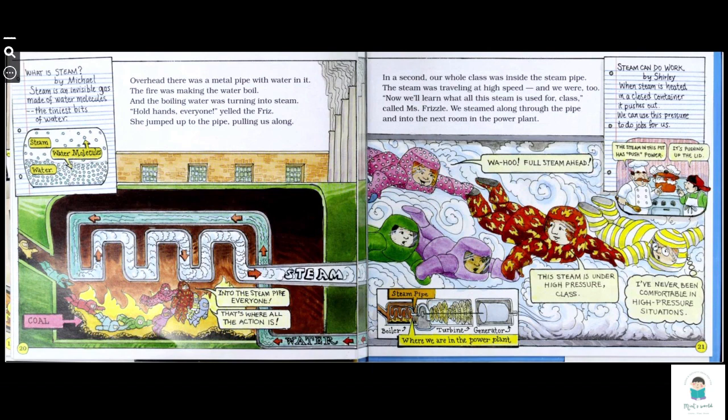Overhead was a metal pipe with water in it. The fire was making the water boil and the boiling water was turning to steam. Hold hands everyone, yelled the Friz. She jumped up to the pipe, pulling us along. Hold onto the steam pipe everyone. That's where all the action is. What is steam? Steam is an invisible gas made of water molecules, the tiniest bits of water.